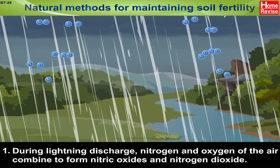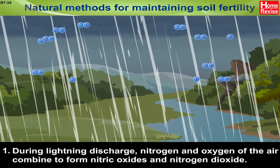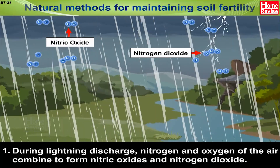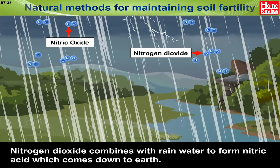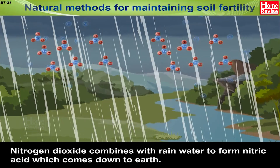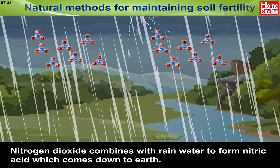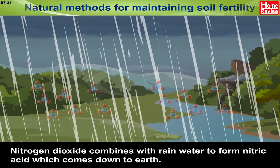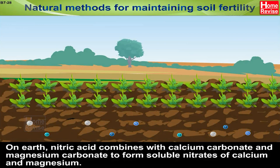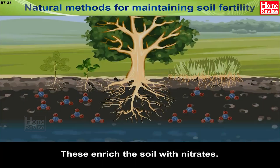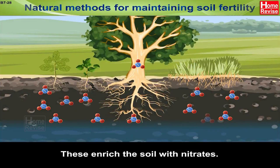During lightning discharge, nitrogen and oxygen of the air combine to form nitric oxides and nitrogen dioxide. Nitrogen dioxide combines with rainwater to form nitric acid, which comes down to earth. On earth, nitric acid combines with calcium carbonate and magnesium carbonate to form soluble nitrates of calcium and magnesium, which enrich the soil with nitrates.